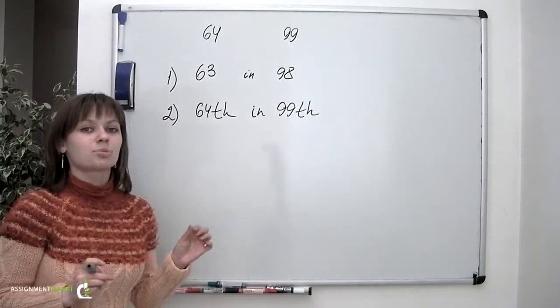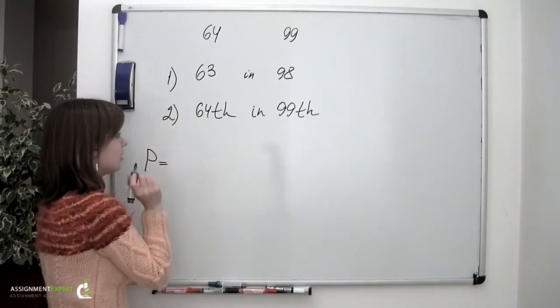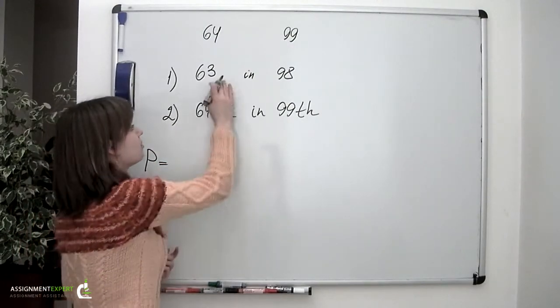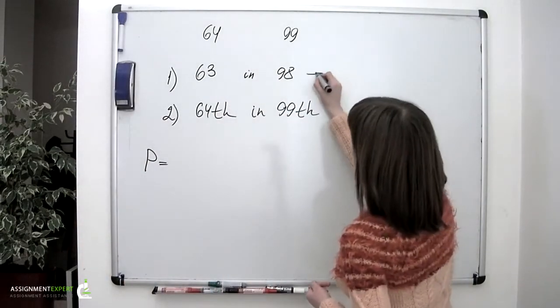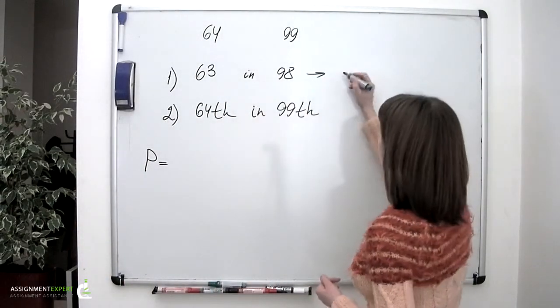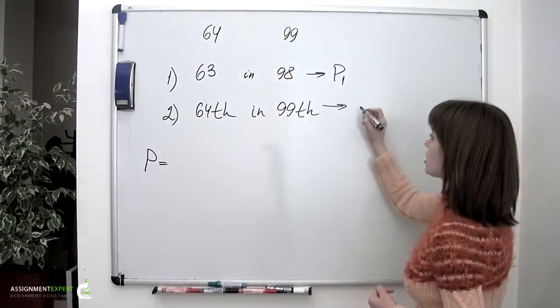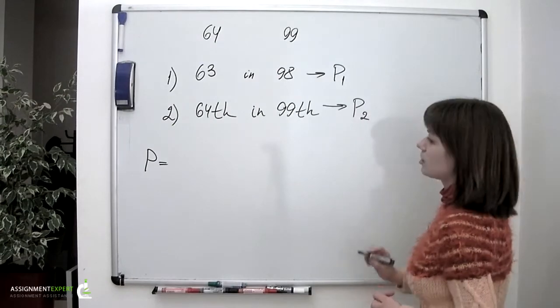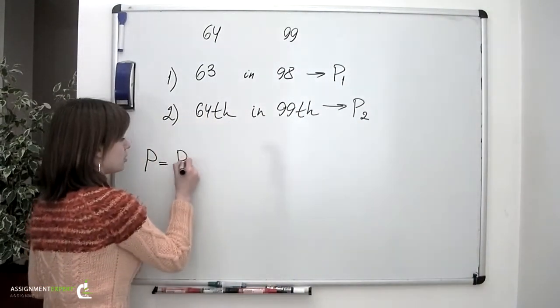So basically the probability we were asked to calculate is the product of probabilities of these two situations. If we name the probability of the first situation as P1 and the probability of the second situation as P2, the probability we were asked about is P1 times P2.